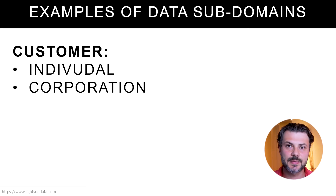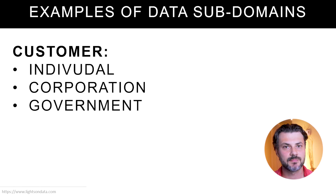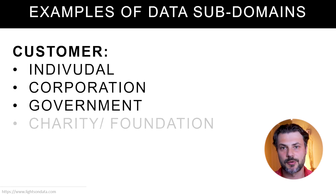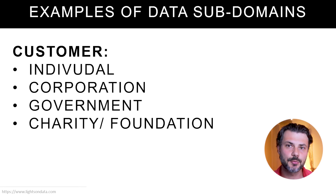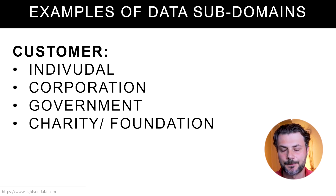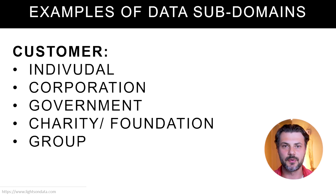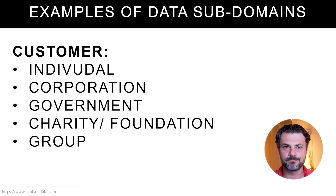We can also have data subdomains such as government, charity or charitable foundation — because their characteristics are distinct enough from a corporation that it merits breaking them into their own data subdomain — and group, which could be a mix of corporations, individuals, or any of the above. Let me know in the comments if you have any of these options for the customer domain or a different one not on this list.